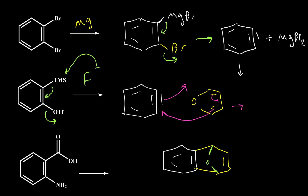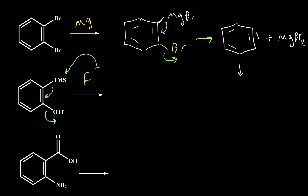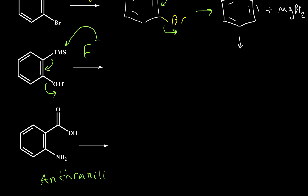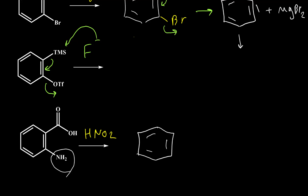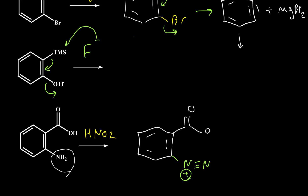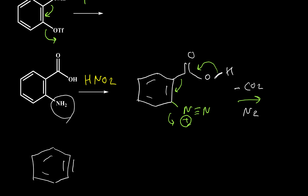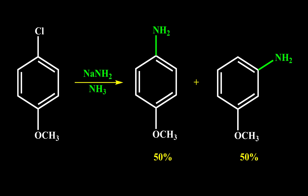For the last method we use anthranilic acid. By reaction of anthranilic acid with nitrous acid, the NH2 group converts to N2⁺, called a diazonium group, which is a very good leaving group, and we also have a carboxylic acid group. By heating this compound, we have formation of benzyne by decarboxylation — loss of CO2 and loss of N2 gas — giving us benzyne. Thank you for watching this video; please subscribe to this channel to get more tutorial videos.